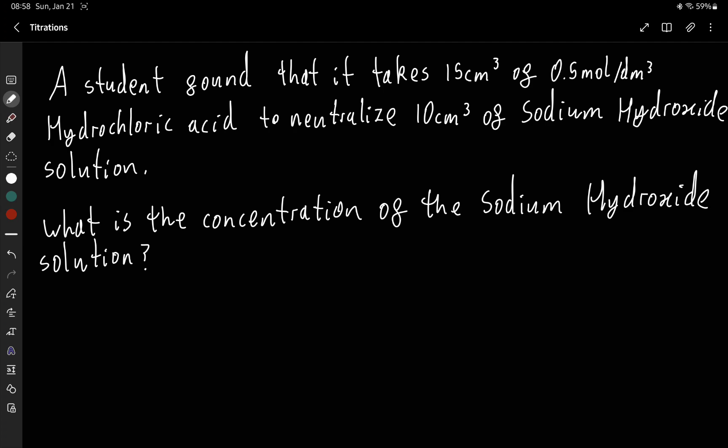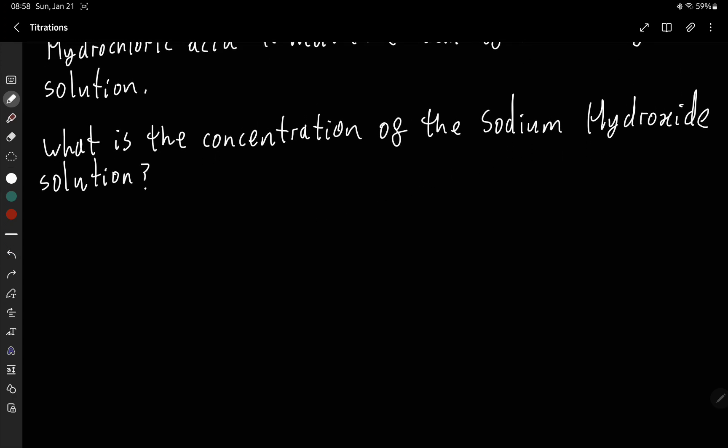So the first step is to find an equation if they're not given it. And so if we remember, an acid mixed with a base or alkali produces a salt and water. So acid plus base produces salt plus water.